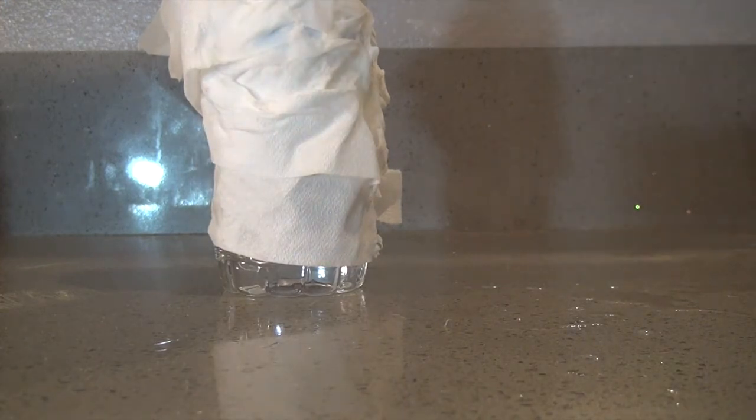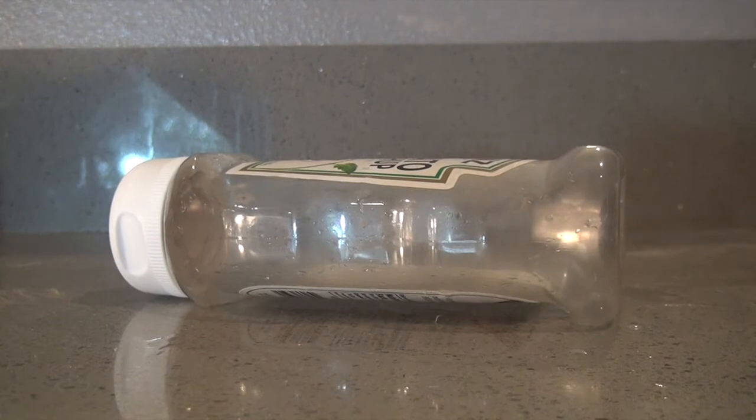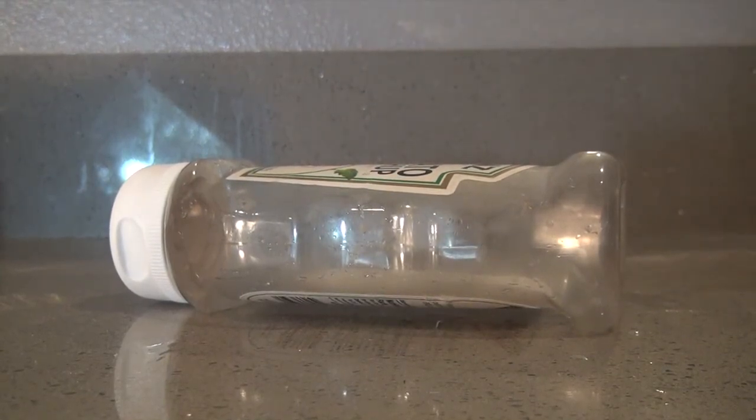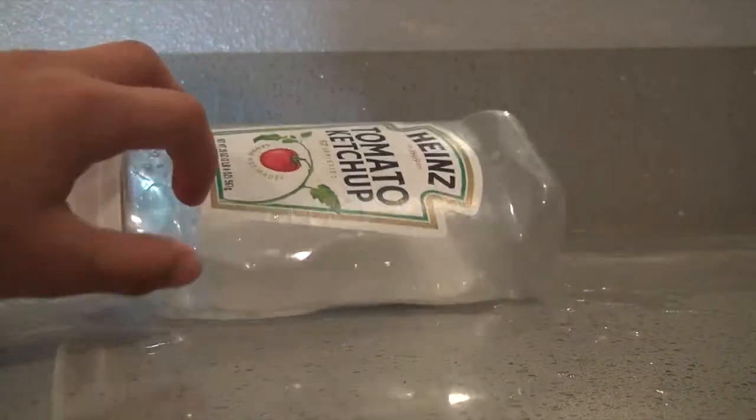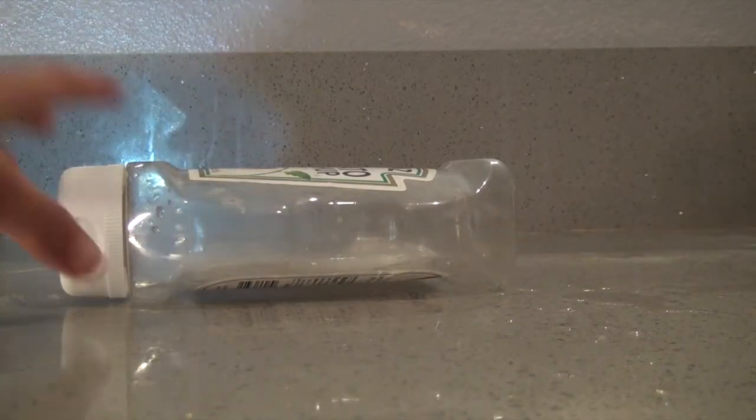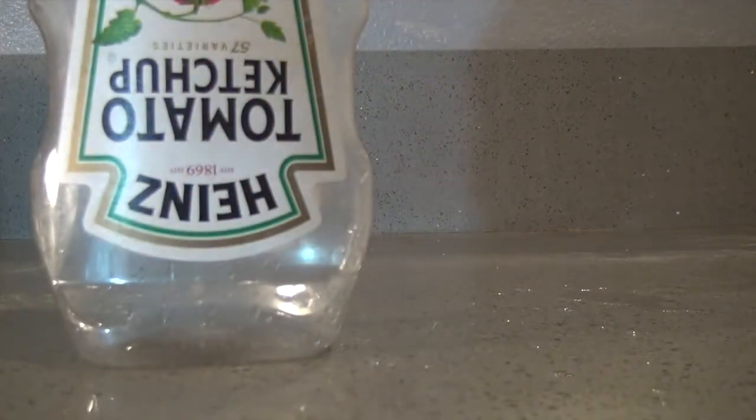For life hack nine, the reasoning is to make better pancakes with a bottle. First, all you need is a Heinz ketchup bottle or a condiments bottle that can squirt out stuff. This is super simple. You just empty it out and clean it. All you gotta do is put your pancake mix in this bottle, shake it up, and then when your pan is hot just squeeze it out to make good pancakes.